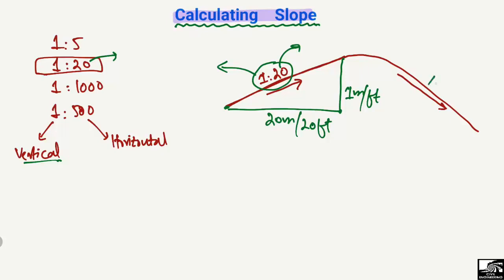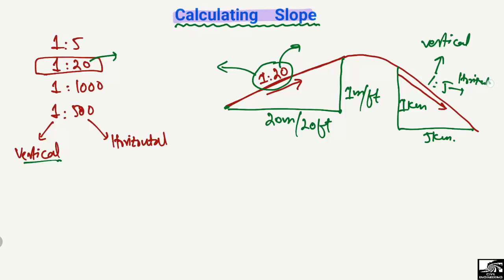For another example, if the slope of a road is 1:5, the vertical part may be 1 kilometer and the horizontal will be 5 kilometers. So the left side always shows the vertical part and the right side shows the horizontal part — whether in kilometers or miles.